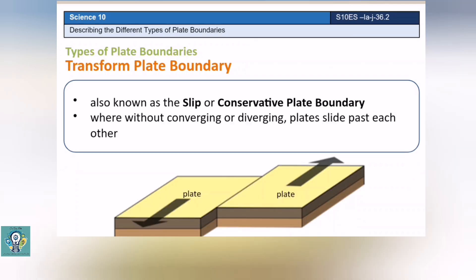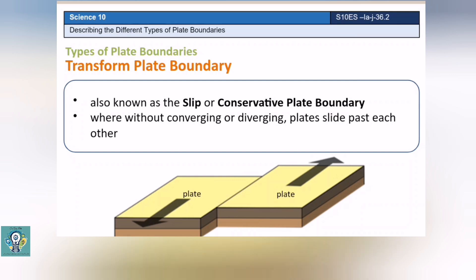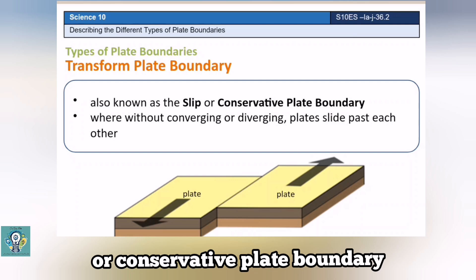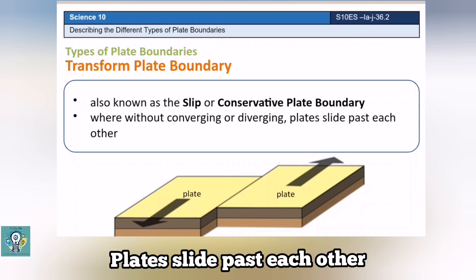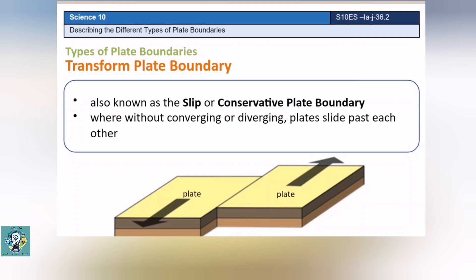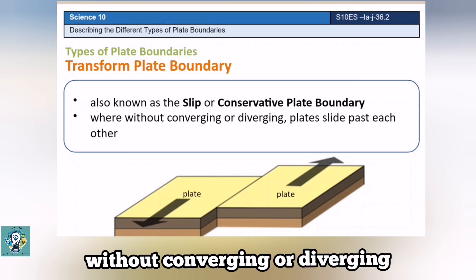The third type of plate boundary is the transform plate boundary, also known as slip or conservative plate boundary. Plates slide past each other, either in opposite directions or in the same direction but at different speeds, without converging or diverging.